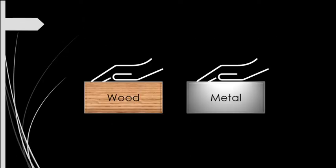Since we will deal more about heat, it is important to differentiate it from temperature. Have you experienced touching a wood and metal objects that are placed in the same room? What did you feel in touching those objects? Majority of you might answer that the metal is much colder to touch than a wood, but in fact, those two objects are at the same temperature.